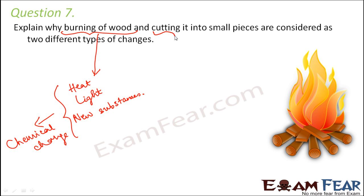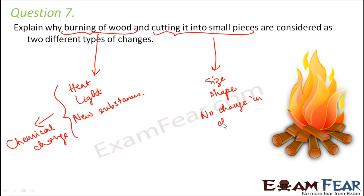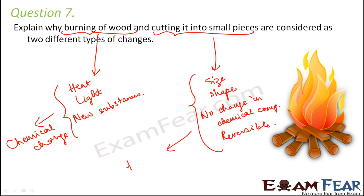Whereas when you look at cutting wood into small pieces, size changes and shape changes, but there is no change in chemical composition. Also, the small pieces of wood can be joined together to form a bigger piece, so it is a reversible change. All these show that cutting it into small pieces is a physical change.